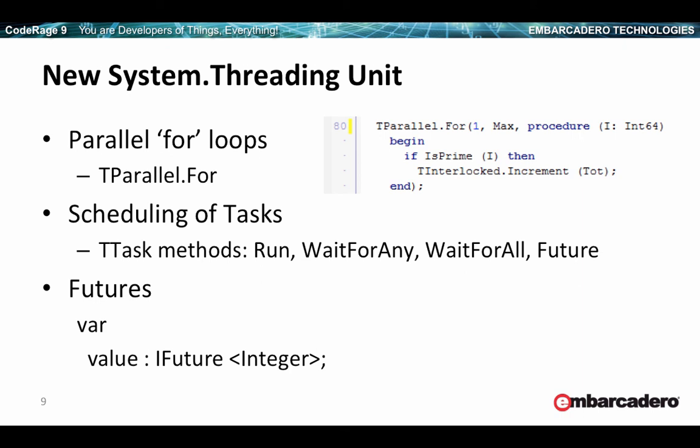The parallel programming library has a couple of key features found in System.Threading. The first is a parallel for loop — you can replace existing for loops and allow the parallel library to run actions inside that loop in parallel. You can also use TTask to schedule tasks. In C++, it's used as a static class with TTask::Run, for example. There's also a futures feature, which sets up a futures call with a callback provided by you, called back when the asynchronous call is completed.